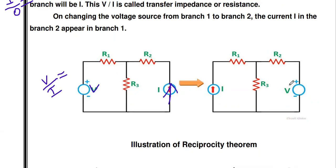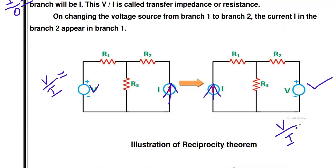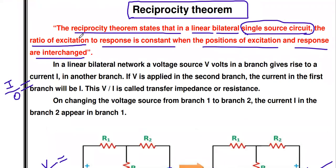In the second diagram, the input voltage source V is applied in the place where we were previously measuring current. We are now measuring the current using an ammeter in the original source branch. When we interchange input and output, we again get some current, and the ratio V divided by i remains the same as in the first diagram. This means the reciprocity theorem is verified.